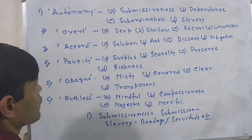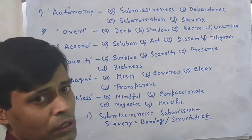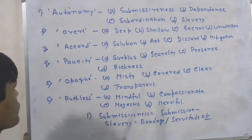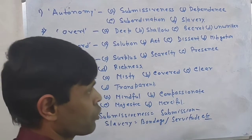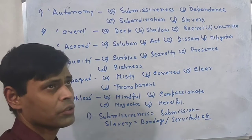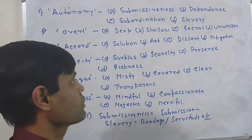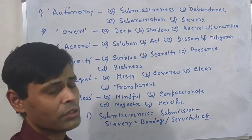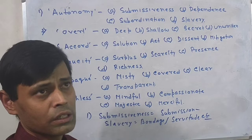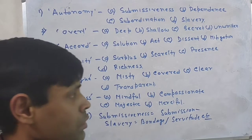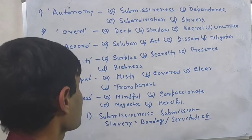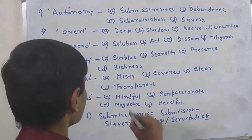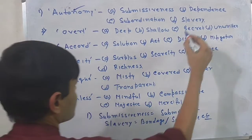Rather, dependence will be the most appropriate antonym for autonomy. Autonomy means it runs on its own, whereas if you say the organization is dependent, that means it does not run on its own but is depending on something else. So the most appropriate antonym for this word is dependence.